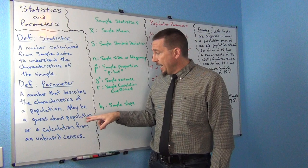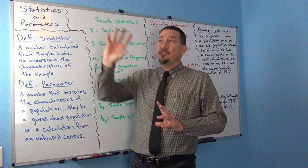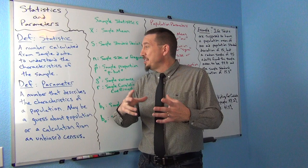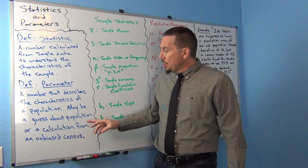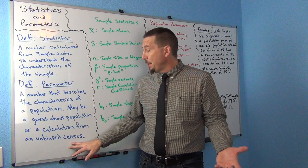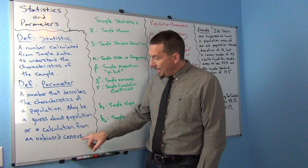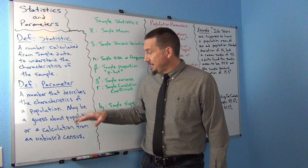Sometimes a parameter can be a guess about the population — looking at lots of samples and then guessing what the population value is. So a population parameter might just be a guess, like 'I think the mean average for everyone in California is this.' But it can also be a calculation from an unbiased census. If you have a complete, unbiased census, you can actually calculate the exact population mean or population percentage. Without an unbiased census, you're stuck making guesses about the population.